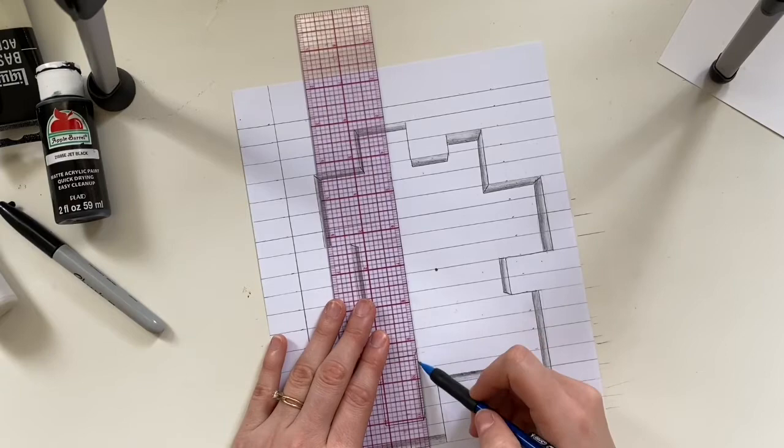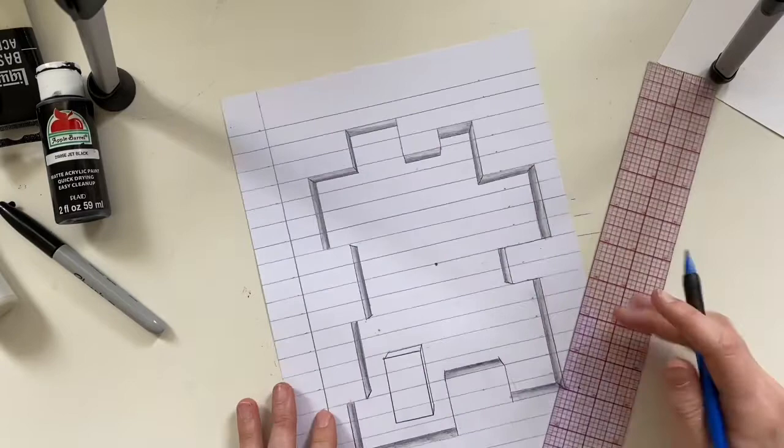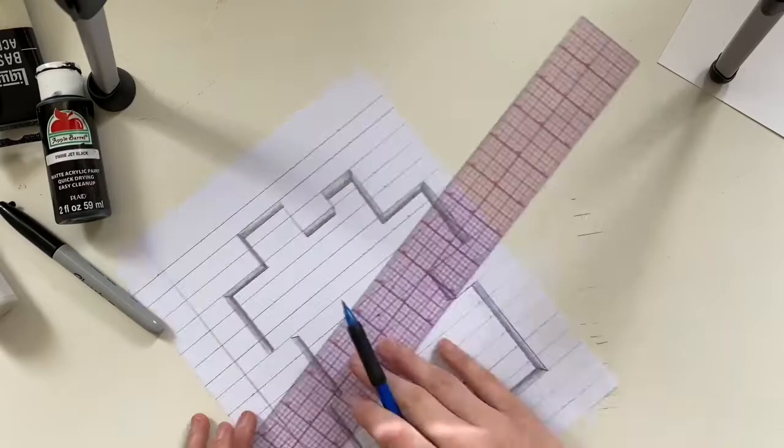So same method you used on the shape on the outside. You're going to do the same for these floating notebook boxes. And then again, same shading.